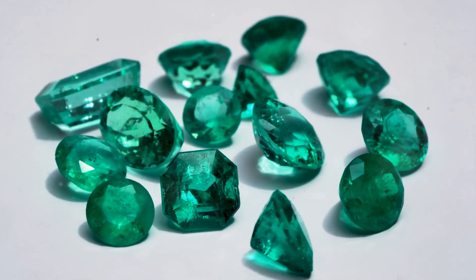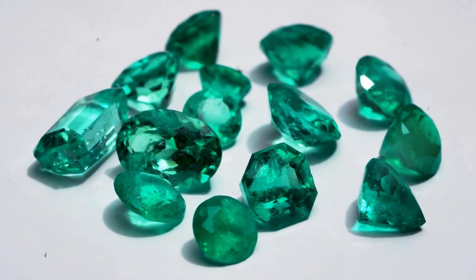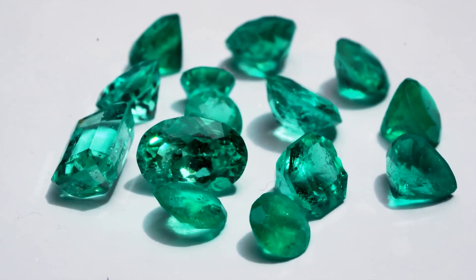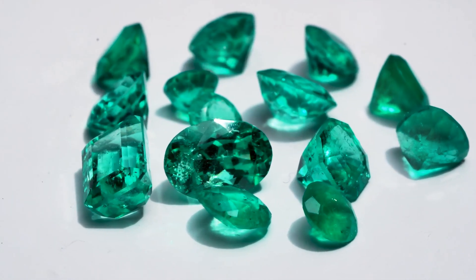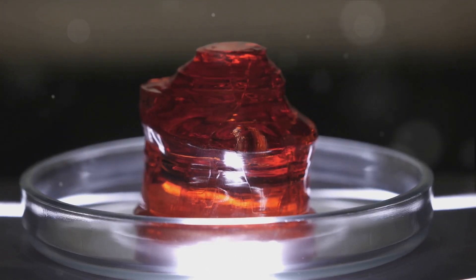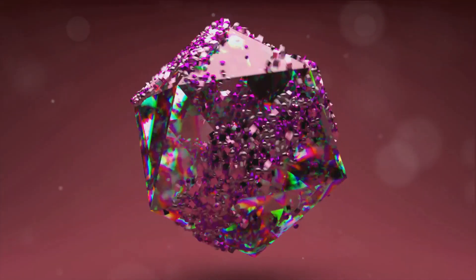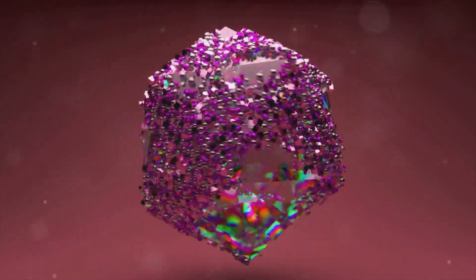Imagine a ruby. Its fiery red color is a testament to the intense heat and pressure it endured to transform from a dull mineral into a gemstone of exceptional beauty. Or an emerald whose deep green hue is a result of trace amounts of chromium and vanadium that were present when it was formed.